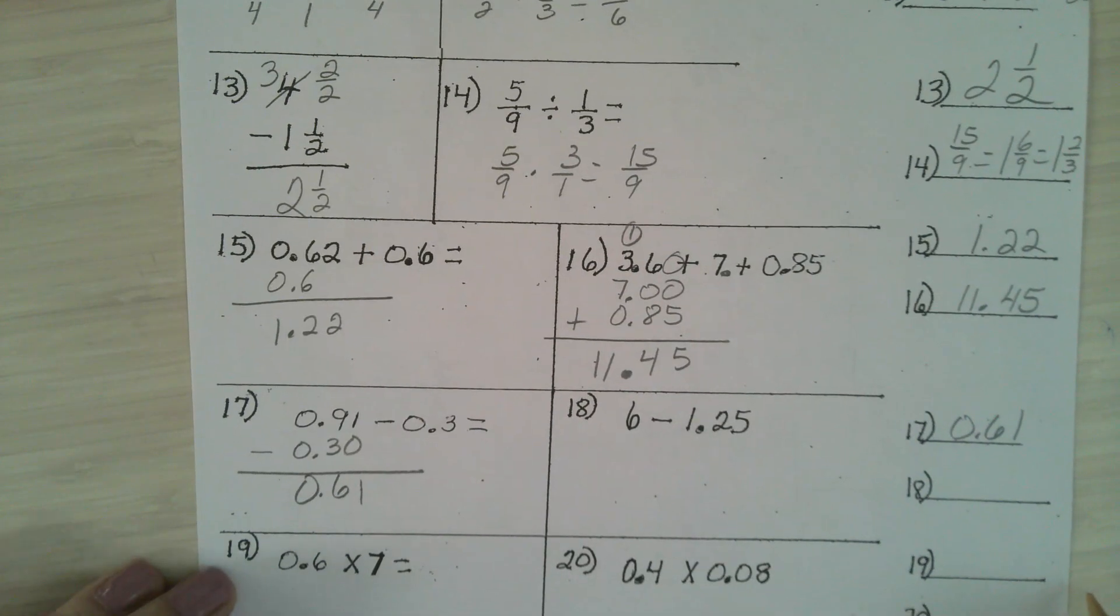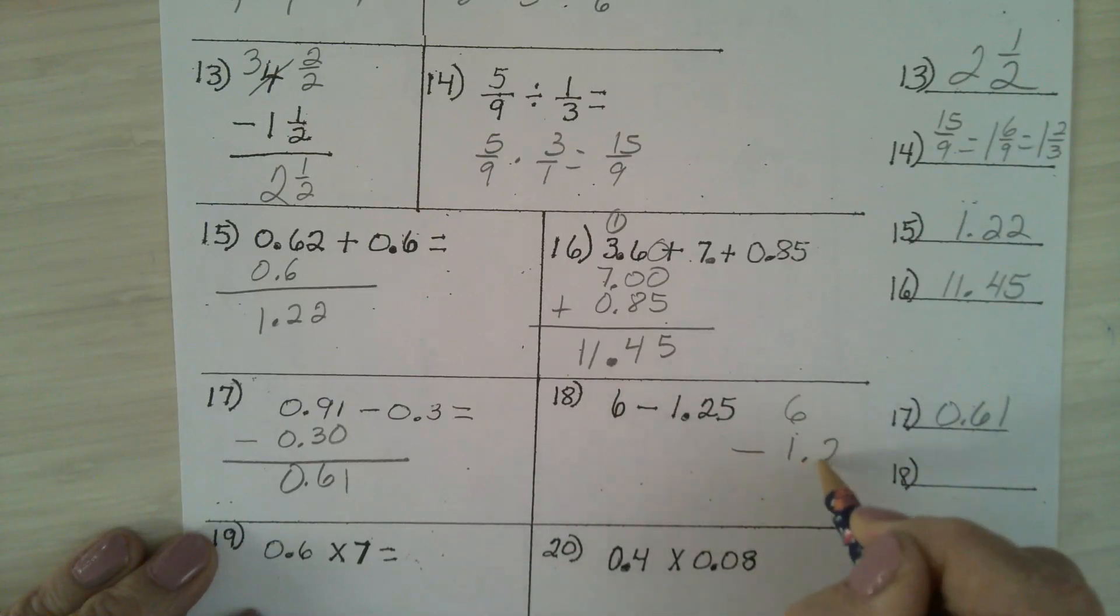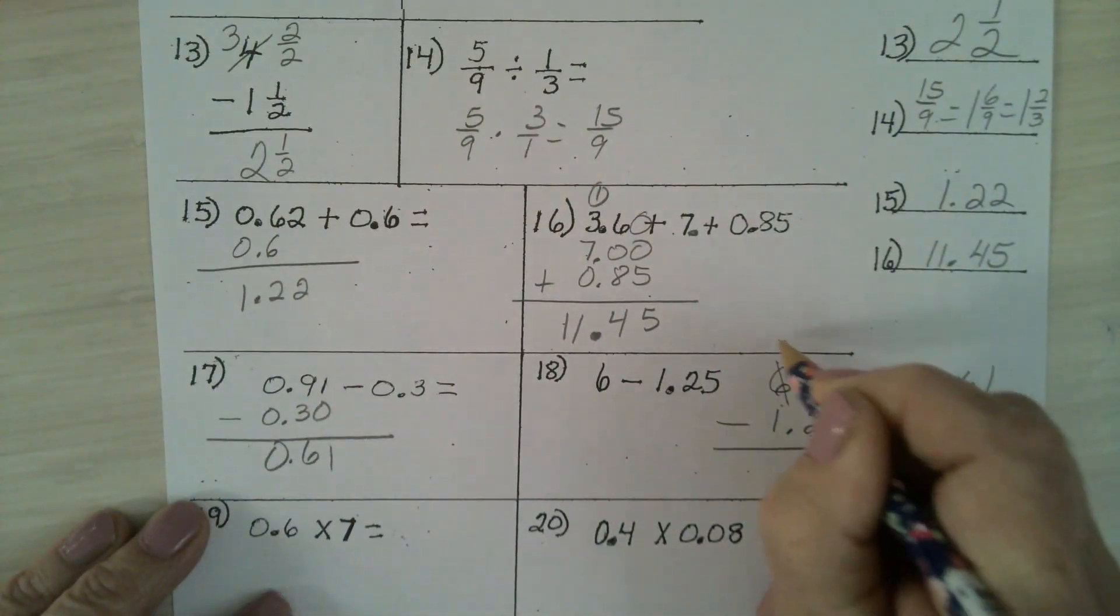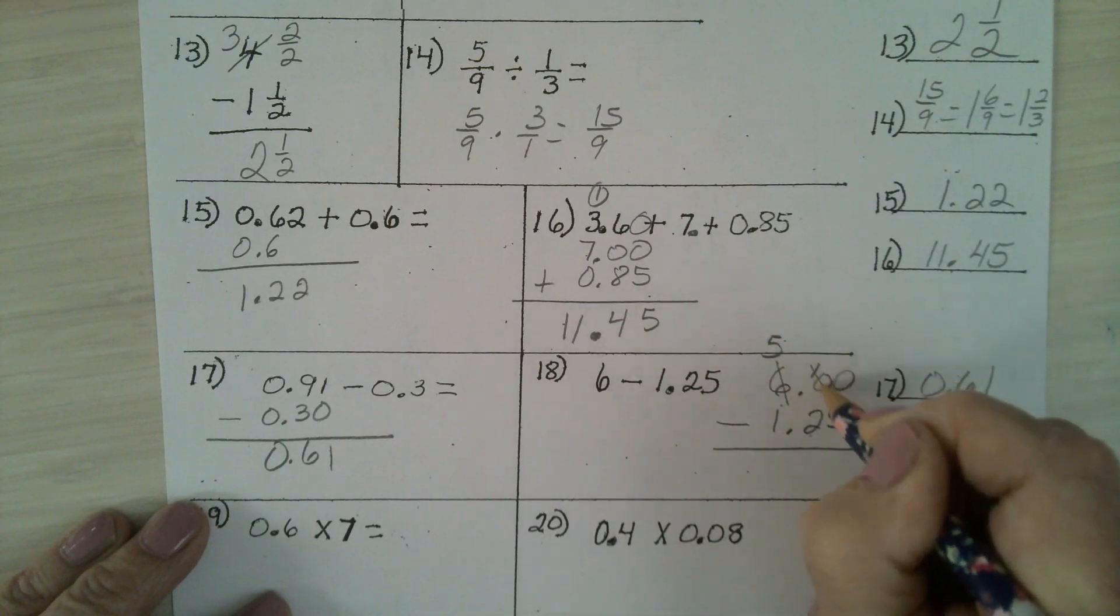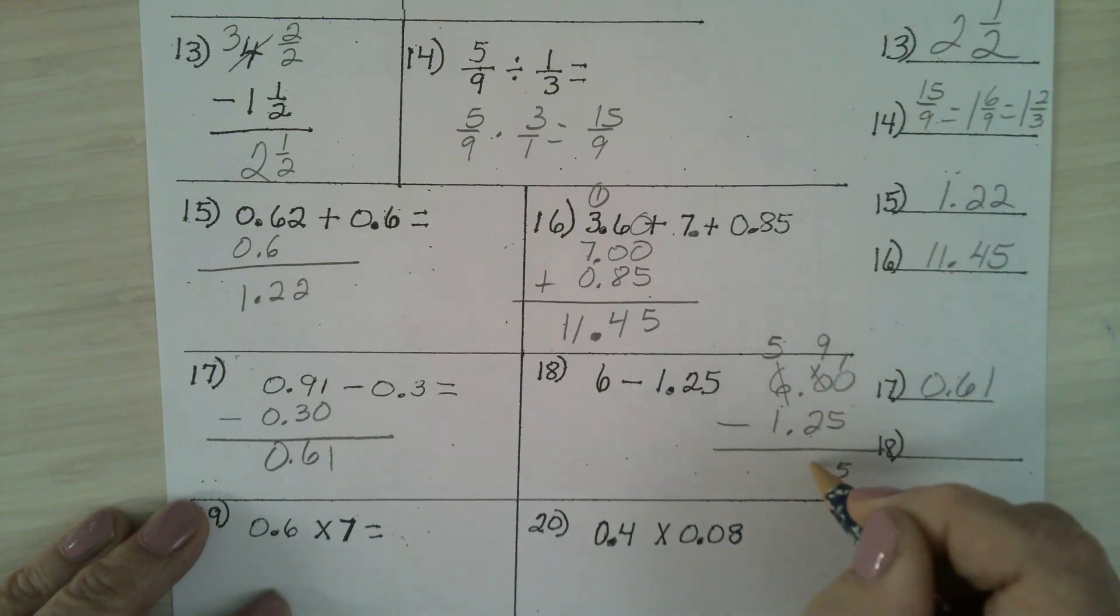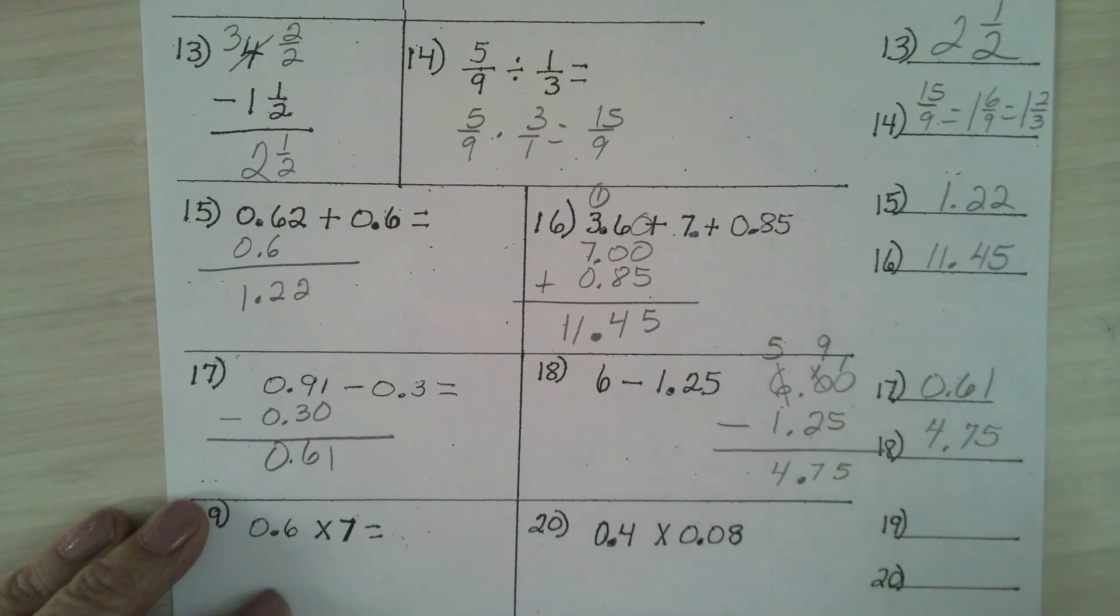Number 18. Whole number 6 minus 1.25. Think of it as $6 minus $1.25. Borrow from the 6. It turns into a 5. That turns into a 10. Borrow that from that. Turns into a 9. So that can be a 10. 10 minus 5 is 5. 9 minus 2 is 7. Don't forget your decimal point. And it's 4.75. Any questions?